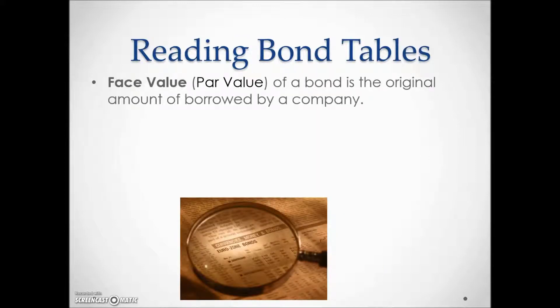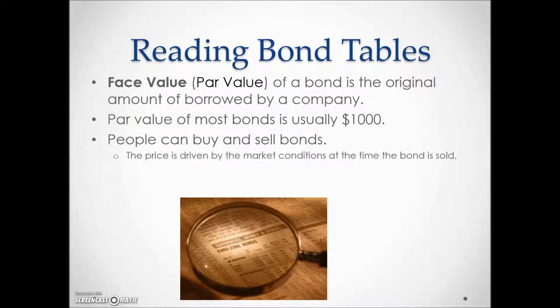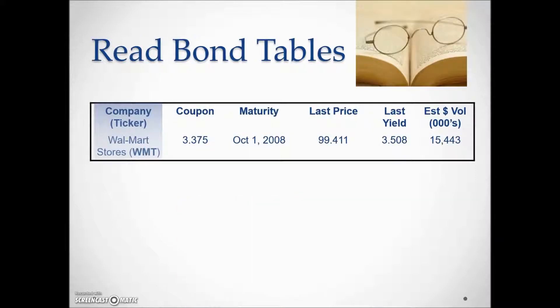Let's read a bond table. The face value or par value of a bond is the original amount of money borrowed by the company. Most public corporations issue bonds with a par value of $1,000. The principal and any interest due must be paid when a bond matures. Because the bond has value, bonds can be bought and sold, and the price is driven by market conditions at the time the bond is sold.